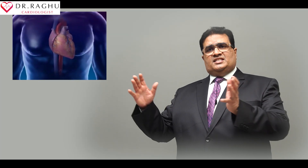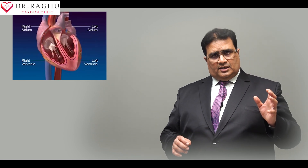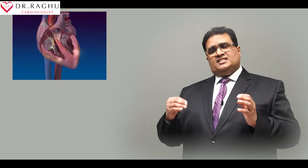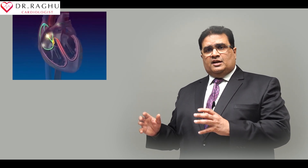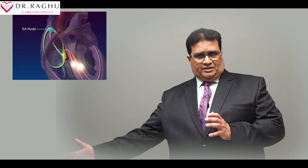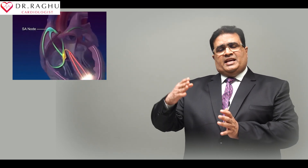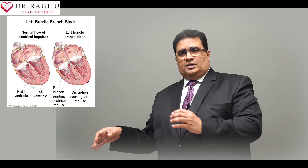In a normal heart, the electrical circuit starts in the upper chambers and traverses through the upper two chambers called the atria, reaches the junction between the upper and lower chamber — the atrioventricular junction — and from there it passes down and activates the left-sided ventricle first, followed by the right ventricle. This is the normal sequence of electrical conduction of the heart, as you can see in the picture.